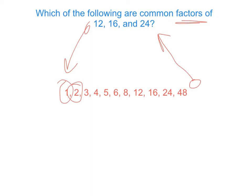Can 3 go into 12? Yes, it can. But 3 cannot go into 16, so it can't be a common factor. Can 4 go into 12? Yes, it goes in 3 times. Can 4 go into 16? Yes, 4 times. Can 4 go into 24? Yes, it goes in 6 times. So 4 is correct. Now, 5 can't go into any of those because none of them end in 5 or 0. 6 can go into 12, but 6 cannot go into 16, so I don't have to use that. 8 cannot go into 12, so I don't even have to check the rest.